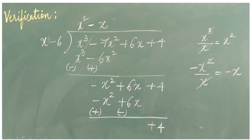Now, to get the second term of the quotient, divide minus x square by x to get minus x. Then minus x into x minus 6 gives minus x square plus 6x. Changing sign for subtraction: minus x square plus x square gets cancelled. Plus 6x minus 6x gets cancelled. And plus 4 remains as a remainder.